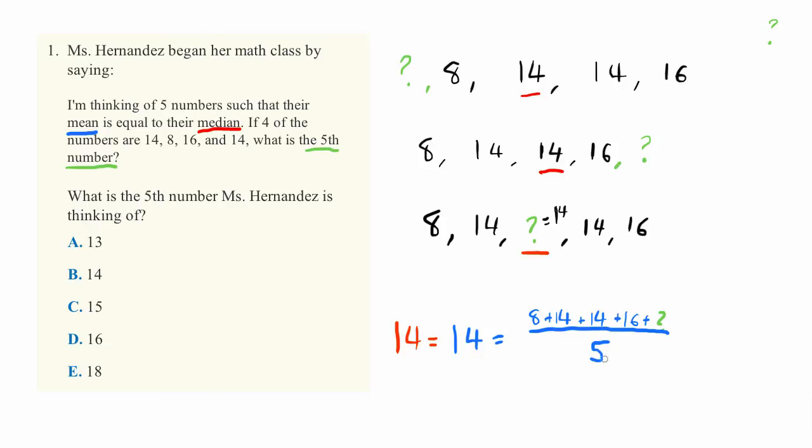So now all we have to do is solve for this equation. Let's go ahead and multiply both sides by 5. 5 times 14, you could use a calculator, is equal to 70. 70 is equal to 8 plus 14 plus 14 plus 16 plus the question mark value.